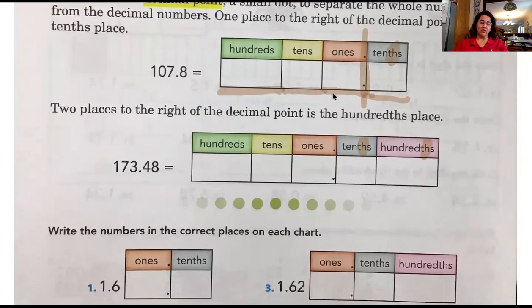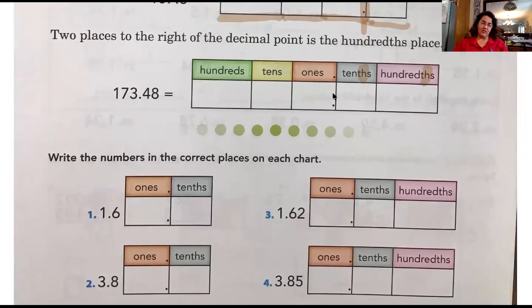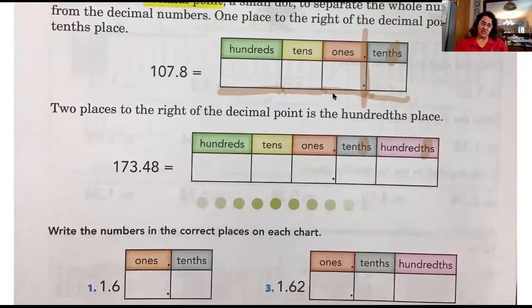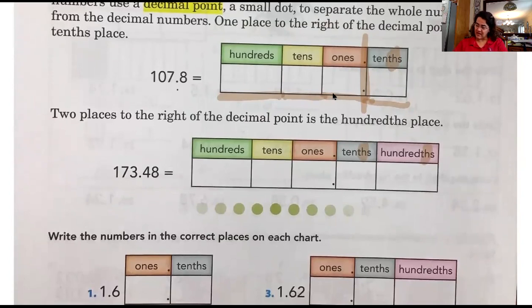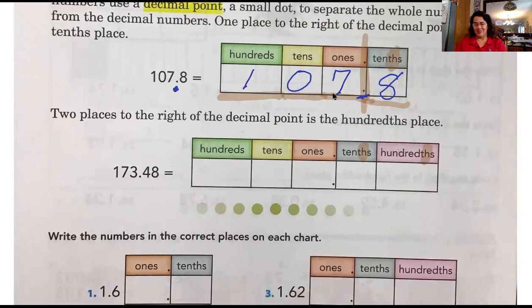We are going to write the numbers in the correct places on each chart. Let's start with the examples. Where would I put 107 and eight tenths? Bradley: put the one in the hundreds place, the zero in the tens place, the seven in the ones place — the decimal is already there — and eight in the tenths. Good job, Bradley.